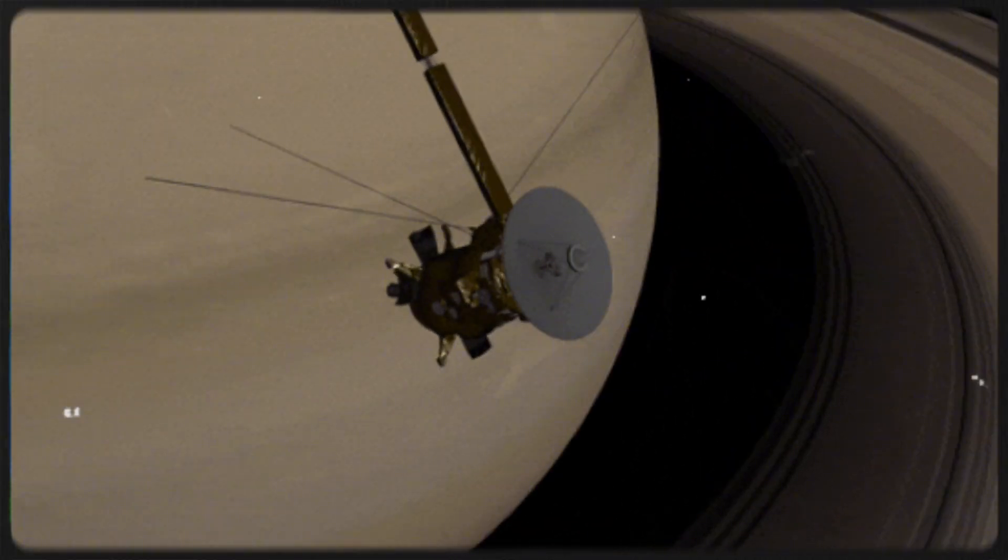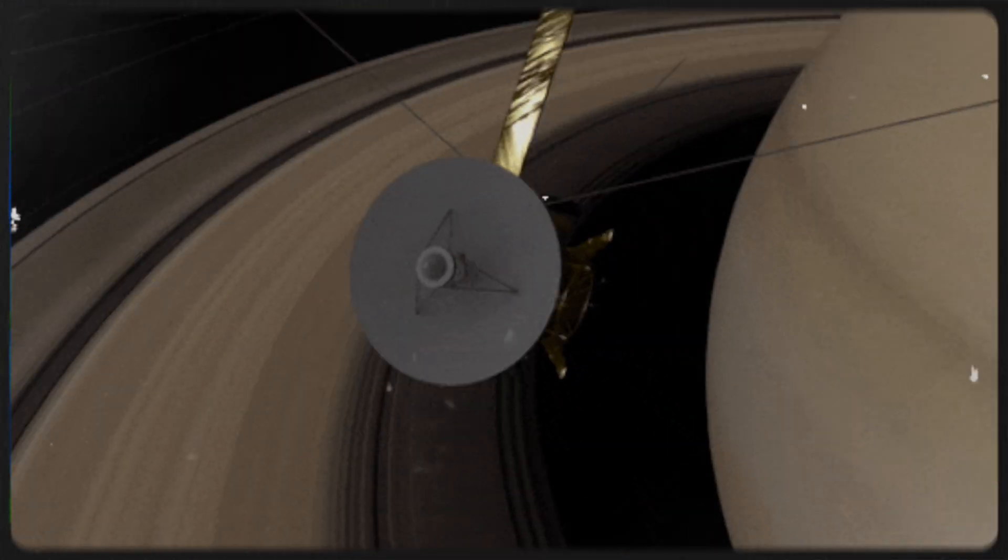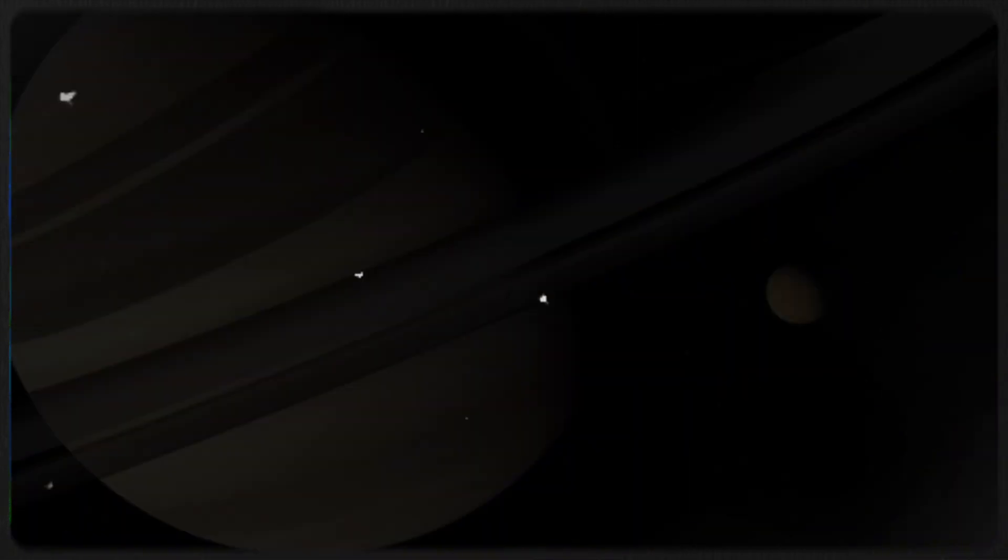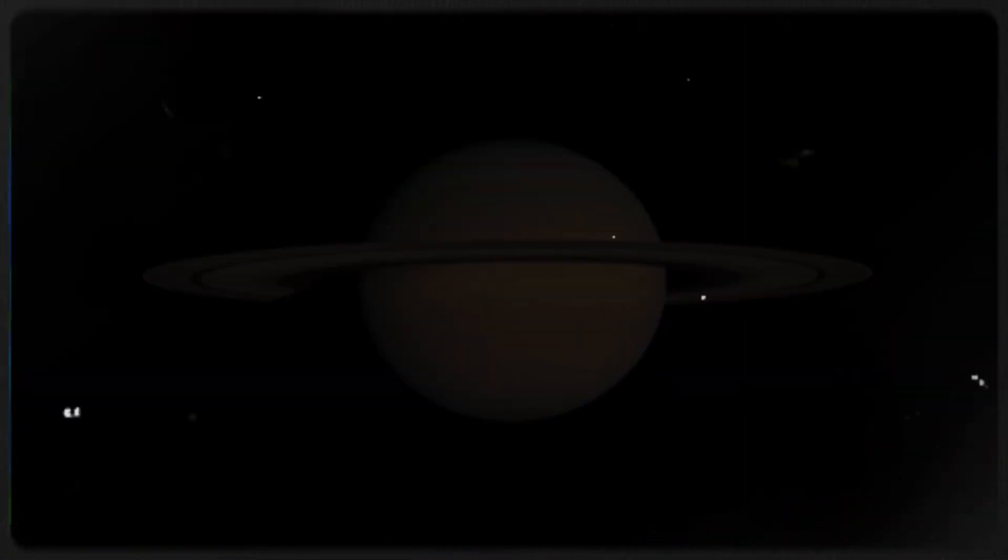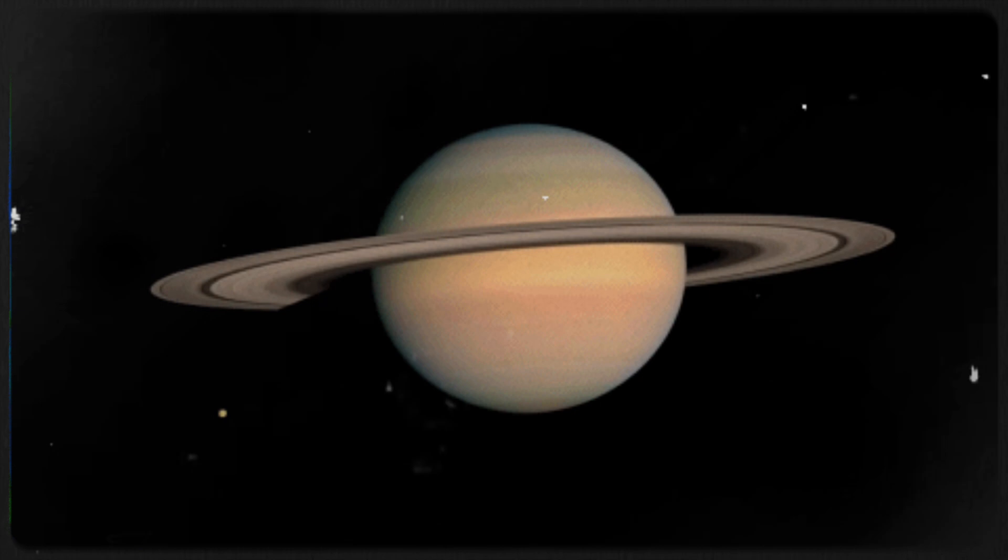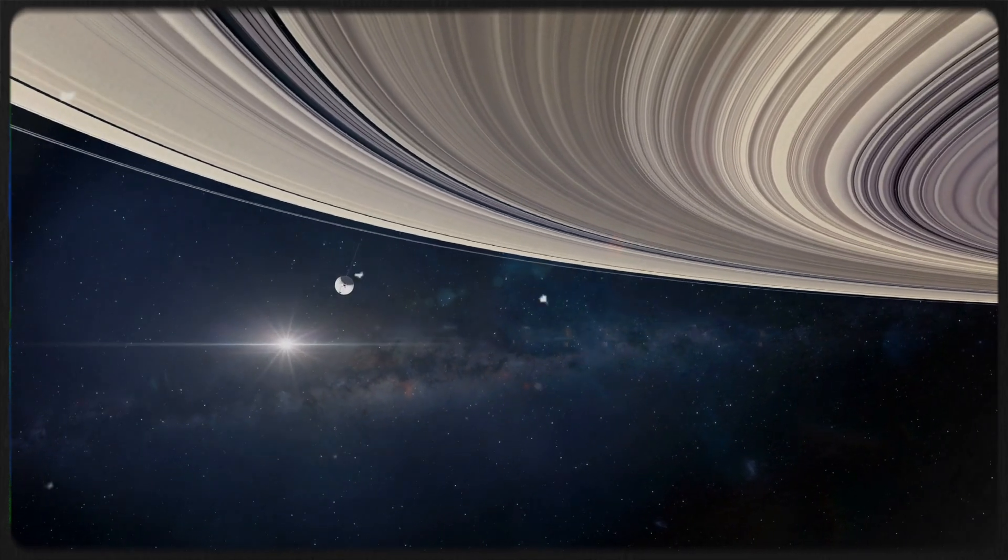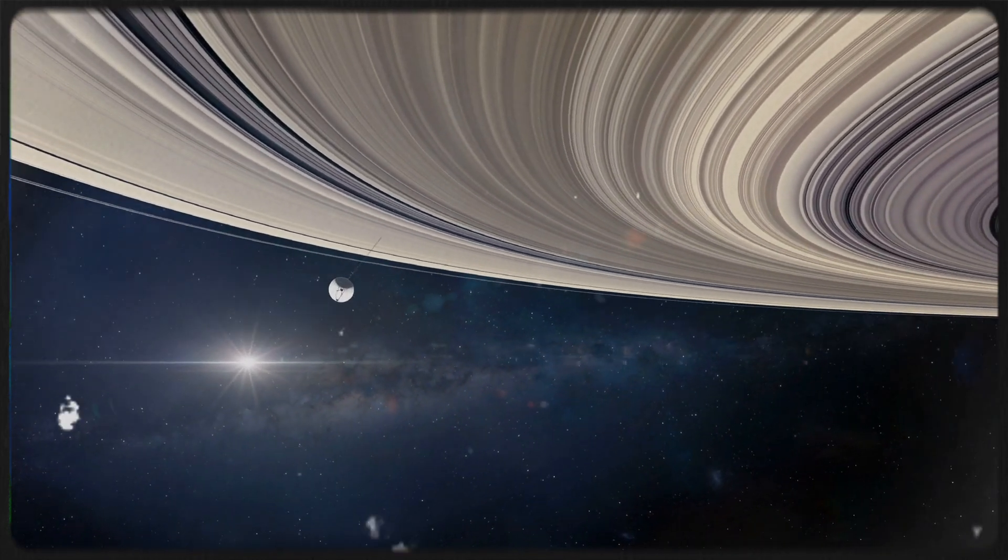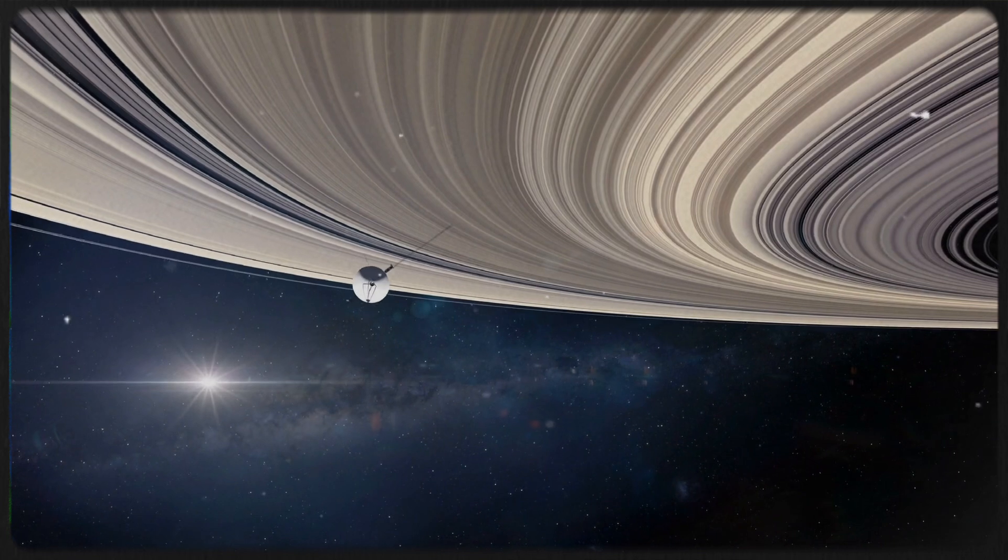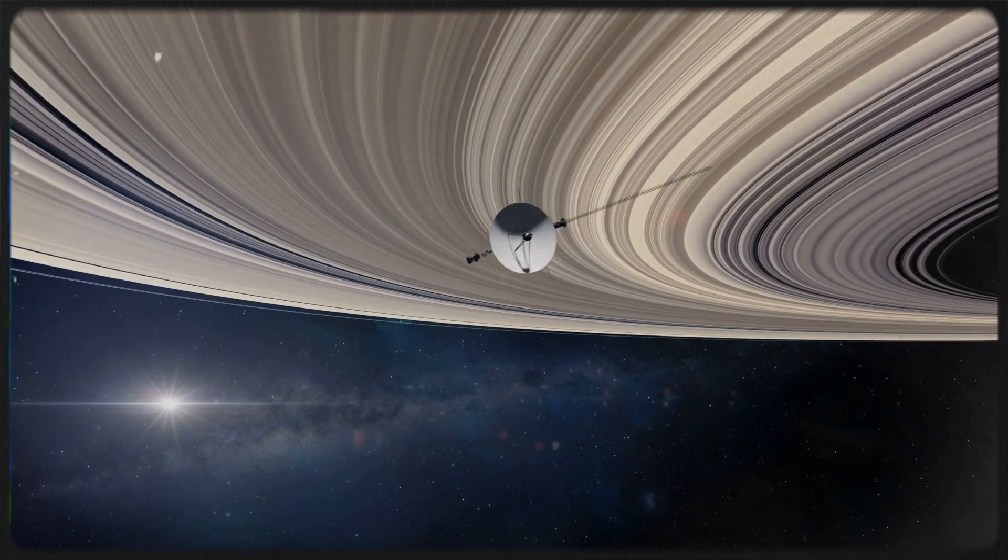At Saturn, the Voyager missions diverged. Voyager 1 flew by Titan, a moon shrouded in orange haze, and then turned north away from the plane of the planets. Voyager 2, after navigating through Saturn's rings and enduring hundreds of impacts from dust particles, continued alone to Uranus and Neptune.